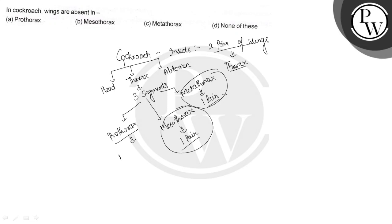The question asks in which segment wings are absent. In the mesothorax there is one pair of wings, in the metathorax there is one pair of wings, but in the prothorax there are no wings. So the right answer to this question is option A.